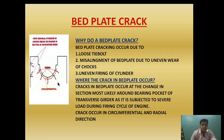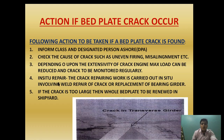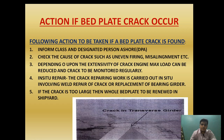Now we will discuss what action to take if a bed plate crack occurs. First, we are going to inform the class society and the DPA. By informing them we can get guidance and maintain good communication. Second, we will check the cause of the crack — as mentioned, uneven firing and misalignment may be the reason. Our main aim is to remove the cause. If uneven firing is occurring, we find out why — if the injector is choked or the unit is not firing properly, we address that. If the engine is not aligned, we take crankshaft deflection readings and align the engine.